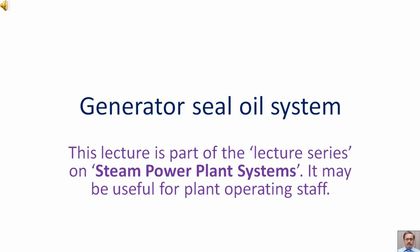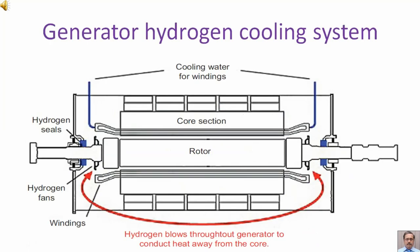This lecture is about the generator seal oil system, part of the lecture series on steam power plant systems. It may be useful for plant operating staff. In a previous lecture, we discussed the generator hydrogen cooling system, which includes hydrogen seals to the left and right of the generator. These hydrogen seals prevent leakage of hydrogen to the atmosphere and also prevent ingress of atmospheric air into the generator.